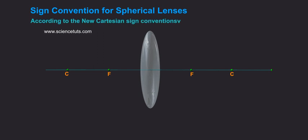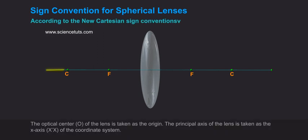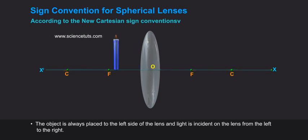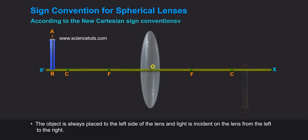According to the new Cartesian sign conventions, the optical centre O of the lens is taken as the origin. The principal axis of the lens is taken as the x-axis of the coordinate system. The object is always placed to the left side of the lens and light is incident on the lens from the left to the right.